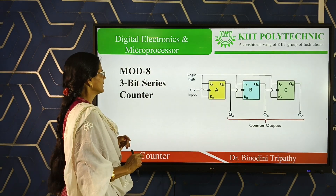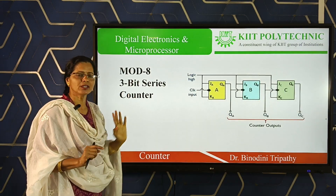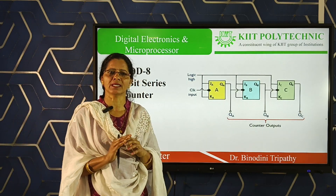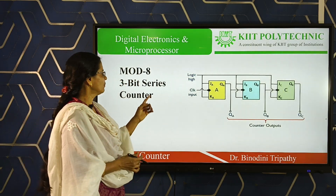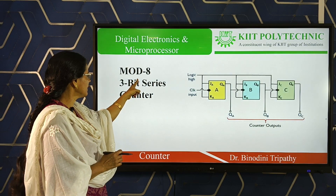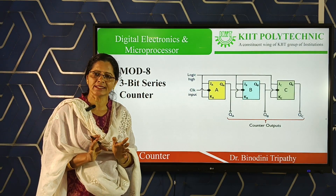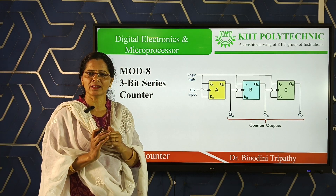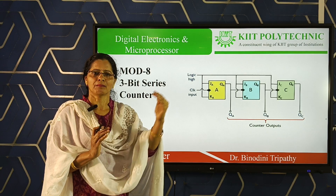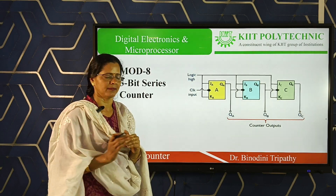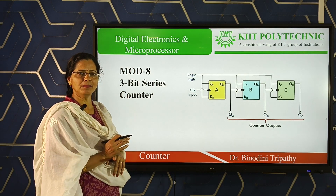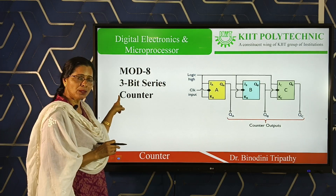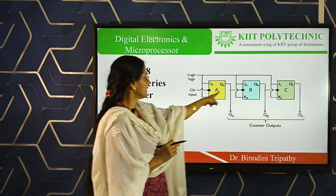Similarly, you can design the mod-8 or 3-bit counter. If you are clear about the first one, you can implement any higher-order design — you just need to know the meaning of the designation. Mod-8 means the total number of counting sequences is 8, and it can count from 0 to 7 (last count is 7). In terms of bits, it has 3 bits, because 8 equals 2 to the power 3. So, number of bits equals number of flip-flops — directly take 3 flip-flops.